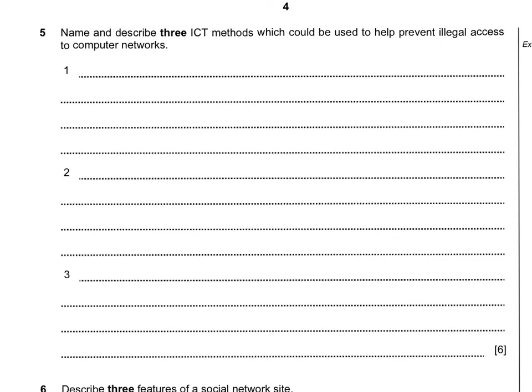In this particular question, it's the computer network section. We have: name and describe three ICT methods which could be used to prevent illegal access to computer networks. The first one, and the most obvious one, is going to be firewall. A firewall will prevent illegal activity from accessing an internal network. It will keep known computers accessing the network and unknown computers being blocked, filtering all information so good information comes onto the network and bad information trying to get in will be blocked.